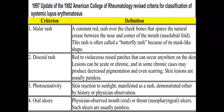Photosensitivity is a skin reaction to sunlight — not simply becoming red from sun exposure as with fair skin. It is a rash that manifests specifically in areas exposed to the sun: the V-shaped area, exposed parts of the neck and arms. The rash appears in sun-exposed areas and is considered abnormal skin reactivity to UV radiation.